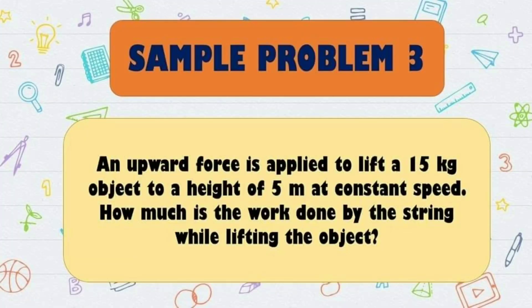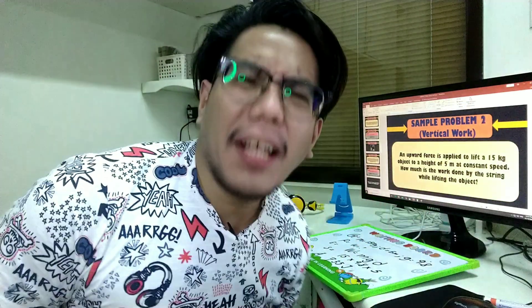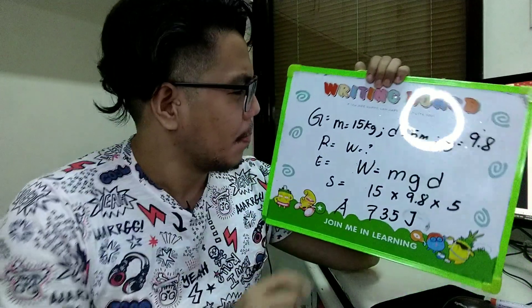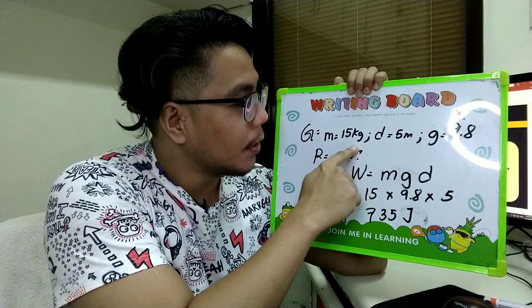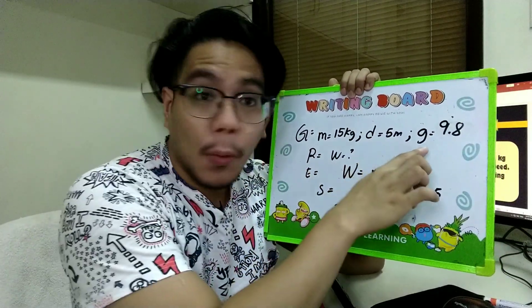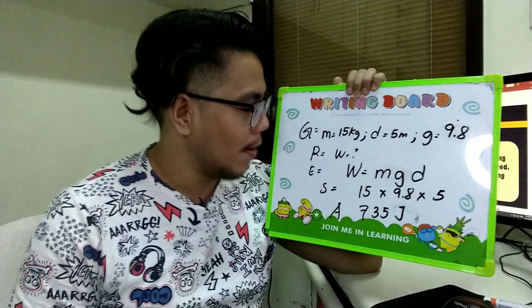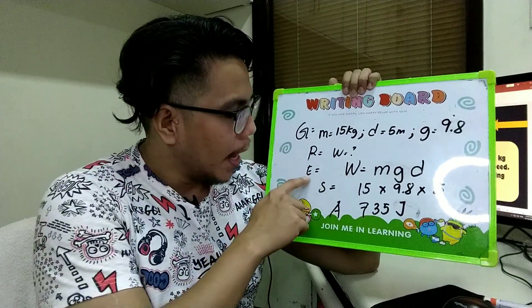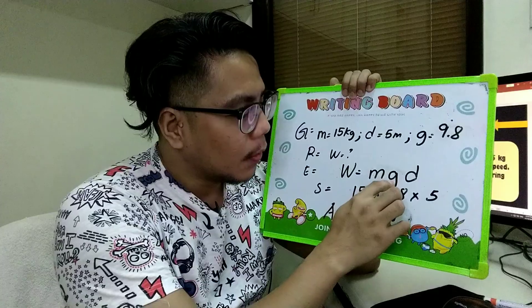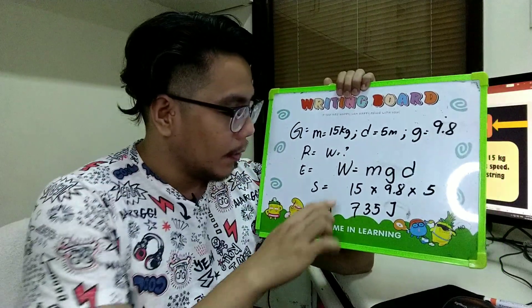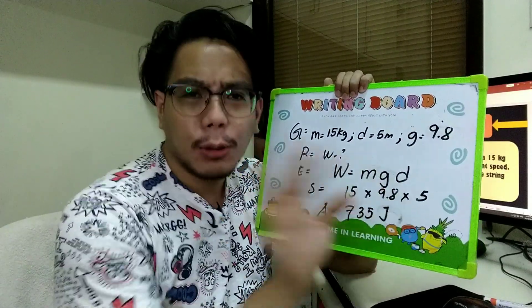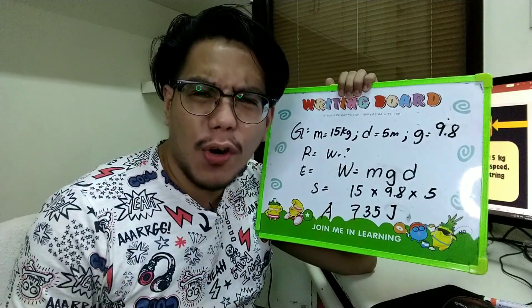By the way guys, yung unang dalawang problems na pinakita kanina are examples of horizontal work. Ngayon naman, papakita ko kayo ng example ng vertical work. Vertical work, let's go! It's time to check our answer. Given: mass is equals to 15 kilograms, displacement is equals to 5 meters, gravity is 9.8 meters per second squared. Required: work is missing. Equation: work is equals to mass times gravity times displacement. Solution: 15 times 9.8 times 5. And the answer is 735 joules. Alright!